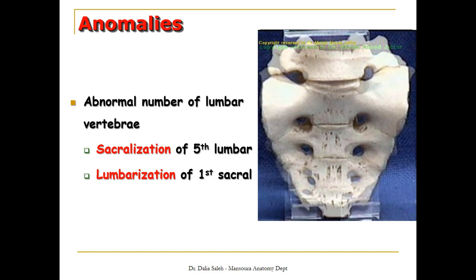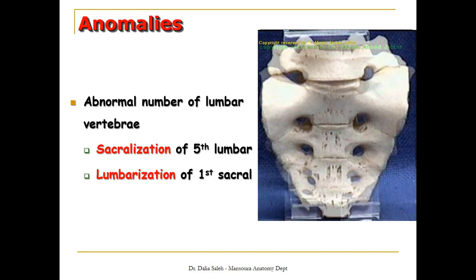Or you have the opposite — what is called lumbarization of the first sacral vertebra. Looking at the sacral foramina, you only have three, meaning that the first sacral vertebra has split from the rest of the sacrum. You end up with six lumbar vertebrae and only four sacral vertebrae. This condition is called lumbarization of the first sacral vertebra.